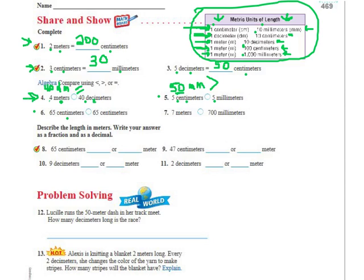Number six — centimeters and centimeters. We don't have to do anything, they're already the same. But for some reason mine looks different than what's in your book. I think yours says 6 decimeters and 65 centimeters. If that's true, let's change the decimeters into centimeters — that means I multiply by 10, which would be 60 centimeters. And this one would be 65 centimeters. So I want my alligator mouth to eat the bigger one. Your book may look different than mine.